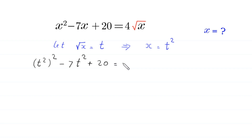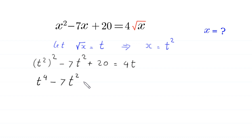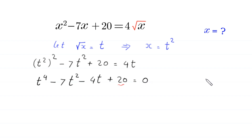So the equation becomes: t squared whole squared minus 7 times t squared plus 20 is equal to 4 times t. Now t squared whole squared becomes t to the power 4, minus 7 times t squared. We move 4t to the left-hand side to get negative 4t, plus 20, is equal to 0.